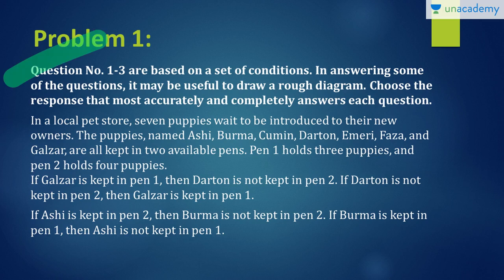Next, we'll move on to the problems. Problem 1. In a local pet store, seven puppies wait to be introduced to their new owners. The puppies named Ashi, Burma, Cumin, Dartan, Emeri, Faza and Galzar are all kept in two available pens. Pen 1 holds three puppies and pen 2 holds four puppies.